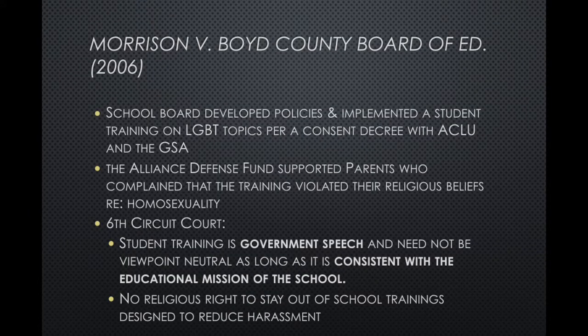The next case is a situation where a conservative religious group took issue with a school district's court-ordered efforts to address anti-LGBTQ harassment at their school. This case took place in Kentucky, where a federal judge had ordered the Boyd County Public Schools to implement an anti-harassment training and updated policy as part of the settlement in a lawsuit the ACLU brought on behalf of students who had wanted to form a Gay-Straight Alliance club at Boyd County High School. The school district agreed to implement the training in 2005 after a judge found a widespread problem with anti-gay harassment in the school.